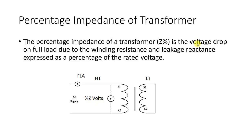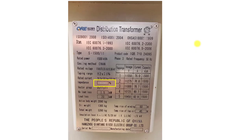Percentage impedance of a transformer is a very important parameter for power transformers and distribution transformers. It is represented by the letter Z with a percentage sign. You will be amazed that it is not measured in ohms — this percentage impedance is measured in voltages, or you can express it in per unit. The percentage impedance is the voltage drop at full load due to winding resistance and leakage reactance, expressed as a percentage of the rated voltage. Looking at a transformer nameplate, you can see the percentage impedance listed.